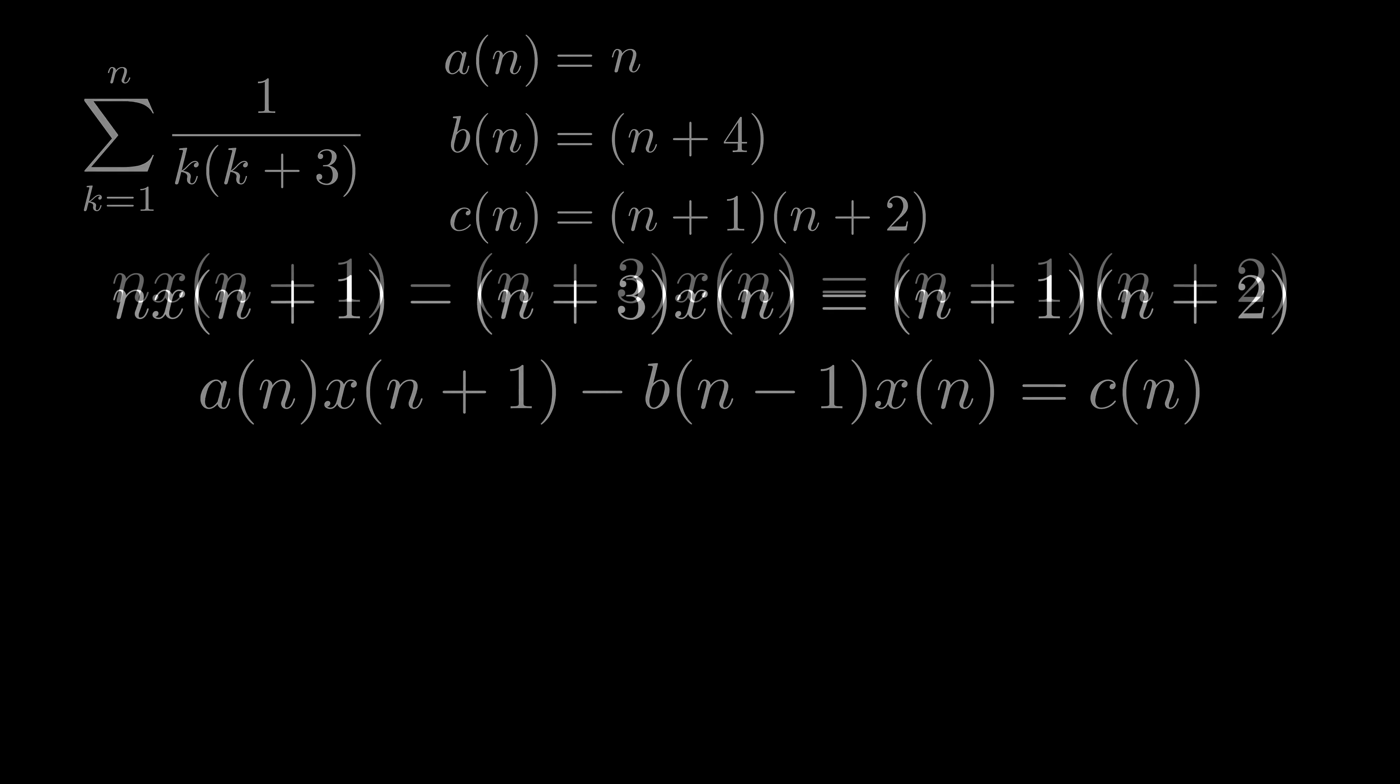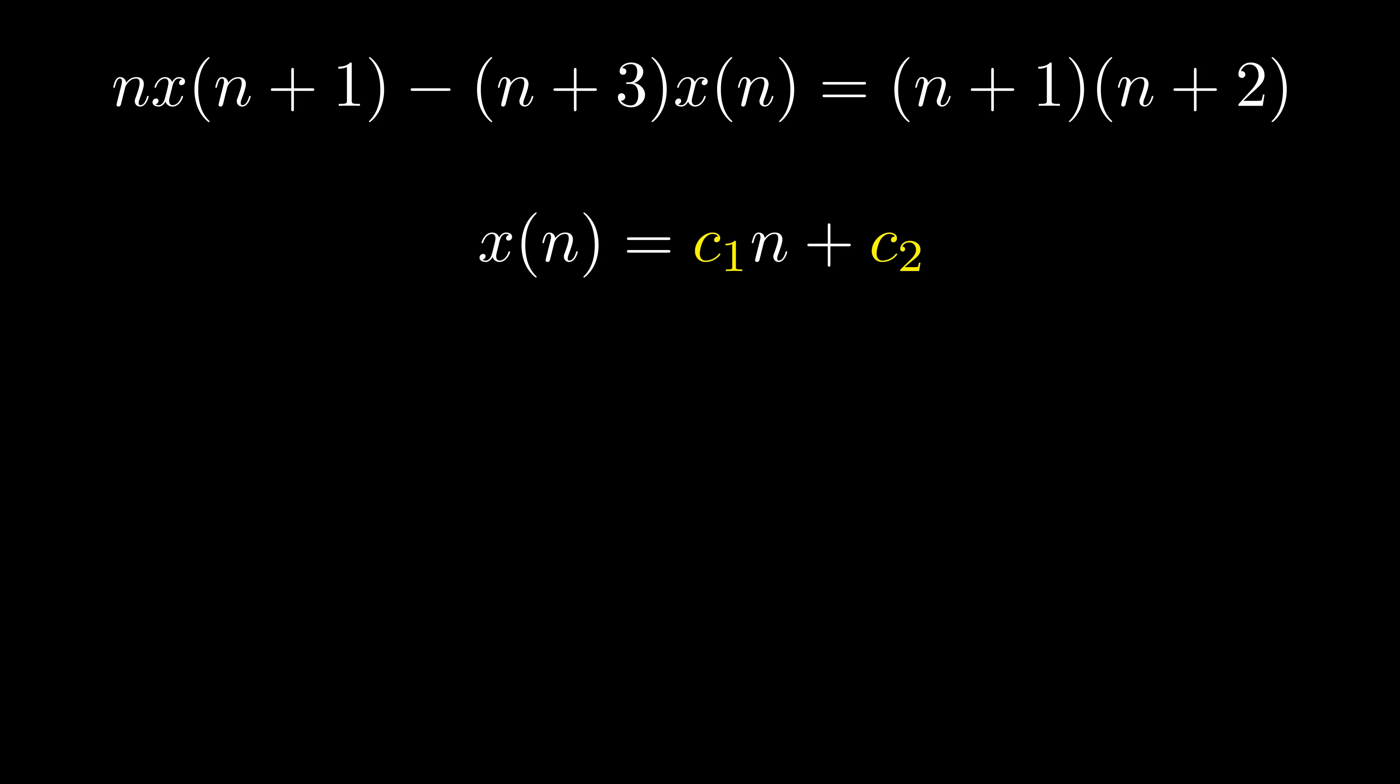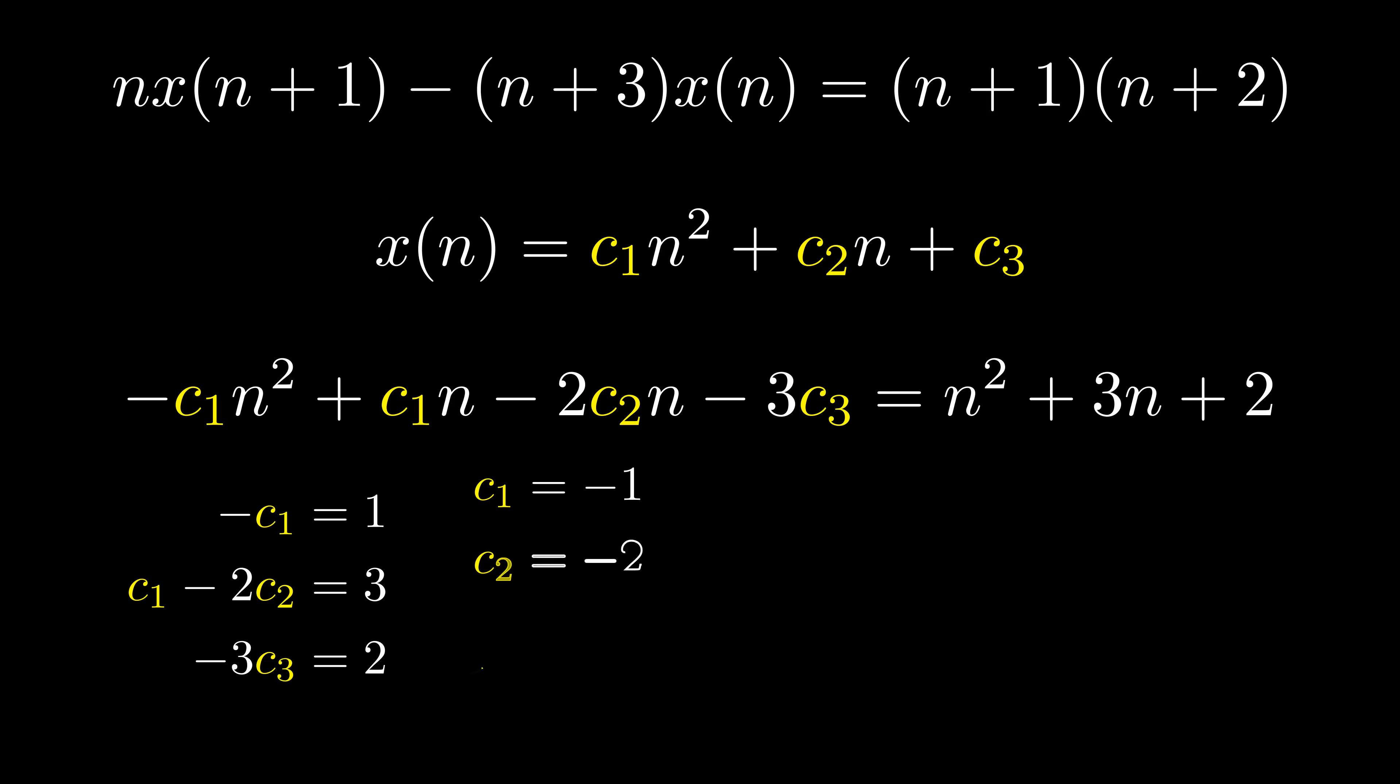The process is actually quite straightforward. It's just very annoying to do. Assume the degree of the polynomial, and then just plug in and solve for the coefficients. If it doesn't work, try a higher degree. If you can show that there cannot possibly exist a solution no matter how high the degree, then there is no solution, and therefore no closed form for the telescoping term. In this case, assuming that x is a quadratic gives us a solution. In more complex cases, there are various ways to estimate the degree of this polynomial to simplify this search.